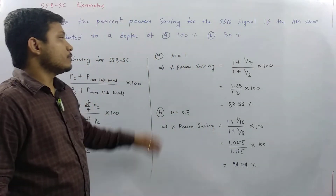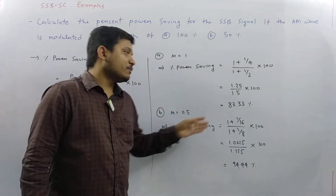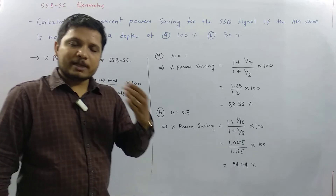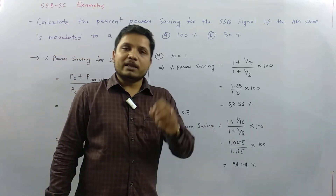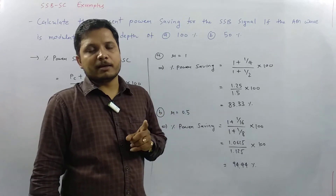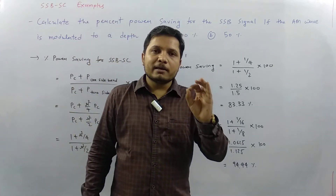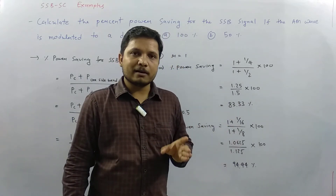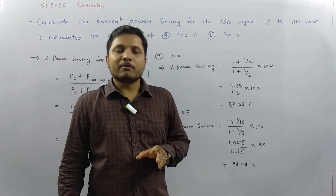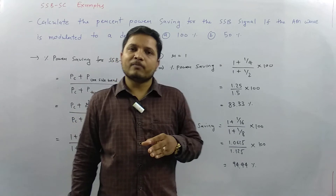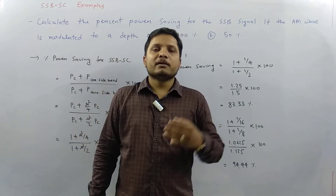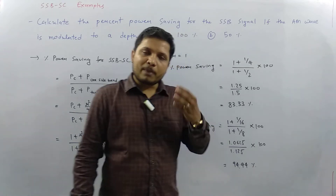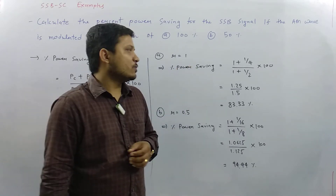So the percentage power saving for SSBSC is 94.44%. In single sideband suppressed carrier we save much more power than DSBSC. One thing we already know is that in SSBSC the bandwidth equals the bandwidth of the modulating signal, while in DSBSC and AM the bandwidth is twice that of the modulating signal — this is one basic advantage. But for power saving there could be exam problems, so one should understand how to solve them.